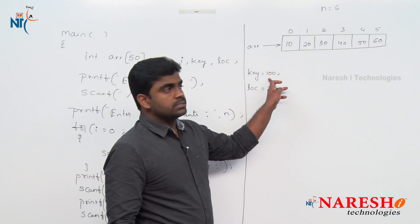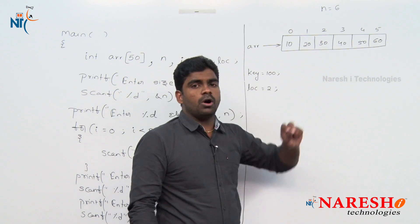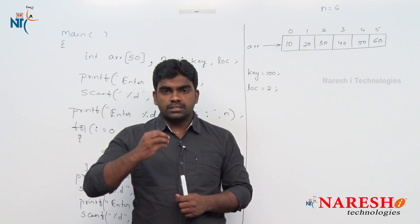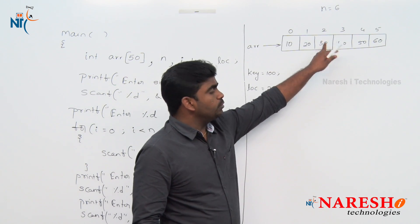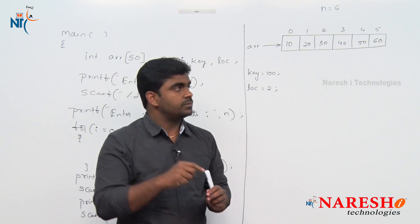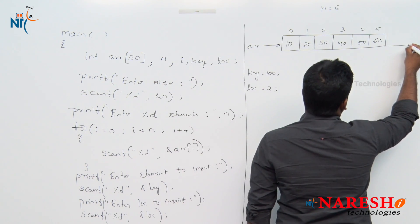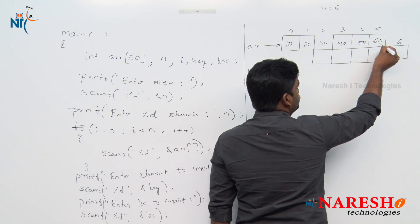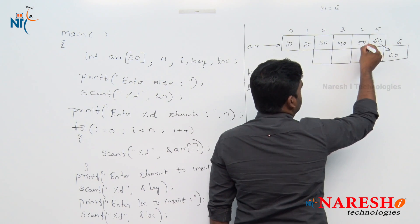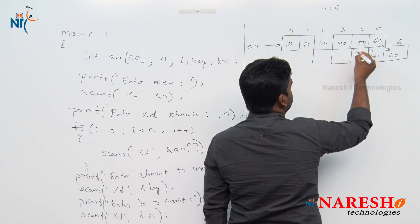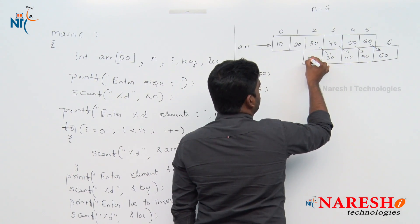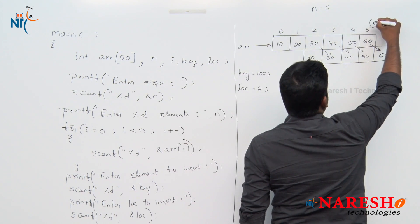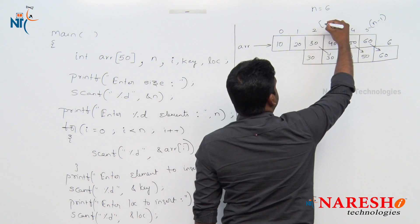Now the new element 100 I want to insert into location 2. But at location 2 already one element is there — that is 30. Directly we cannot insert because if we insert the value directly we lose the value 30. So we should shift all the elements. We should shift all the elements by one location. 60 we should move from the fifth location to the sixth location.